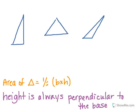To find the area of a triangle, we know that the formula is 1/2 base times height. We have to remember that the height is always perpendicular to the base.